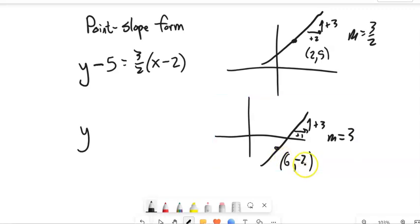So this would be y minus the y part, so minus negative 2, which is plus 2, equals 3 times x minus the x part, x minus 6.